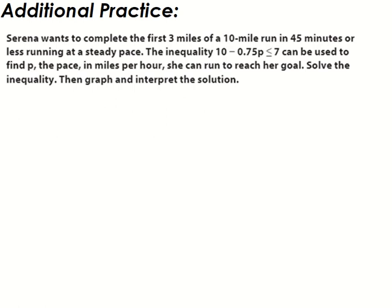Okay, so Serena wants to complete the first three miles of a 10-mile run in 45 minutes or less. At a steady pace, the inequality 10 minus 0.75p less than or equal to 7 can be used to find p, the pace, in miles per hour. She can run to reach her goal. So solve the inequality, then graph and interpret the solution.